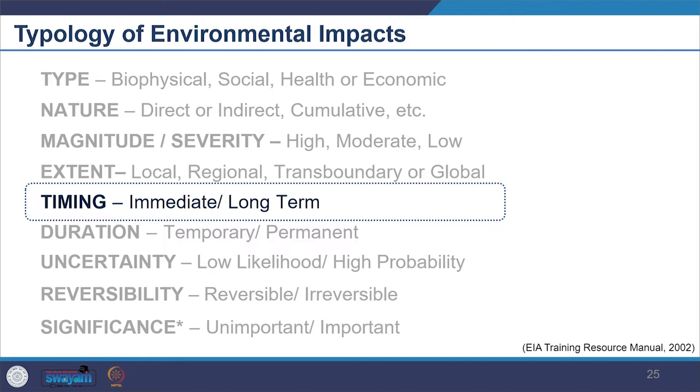We also look at the timing of the project — the impact can be immediate or long term. For example, an increase in noise level because of the project causing irritation would be immediate, whereas toxic pollution coming from any kind of project may have deformed childbirth for several generations. We also see whether the impact would be a temporary impact during the construction period or one that goes from generation to generation.